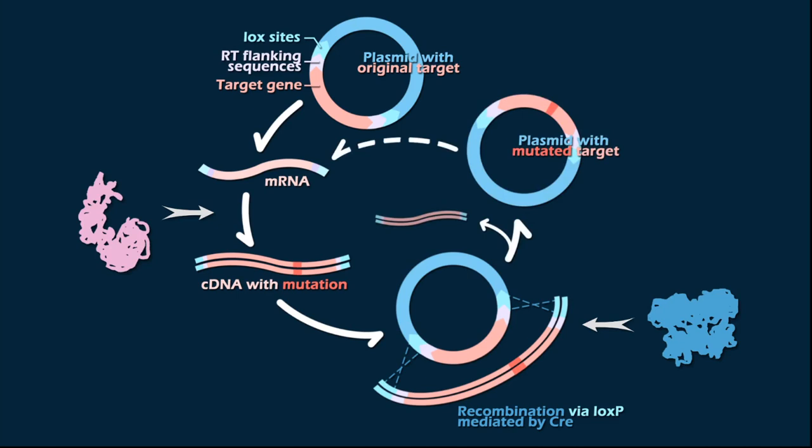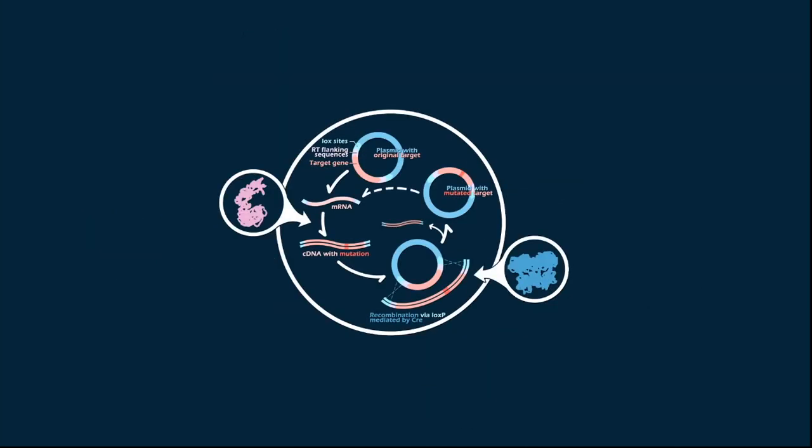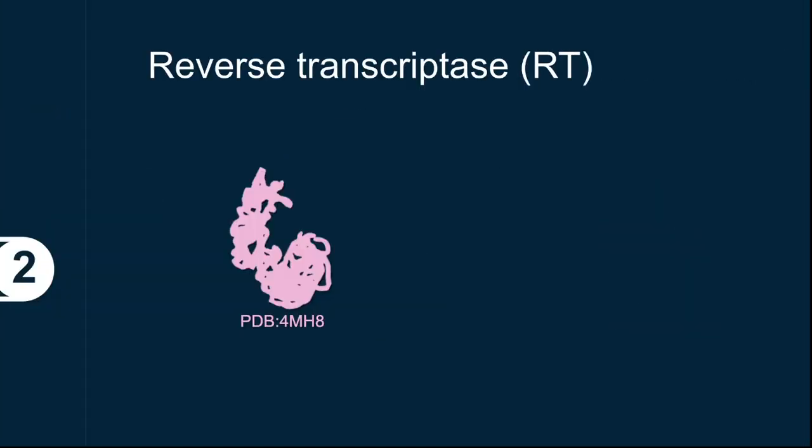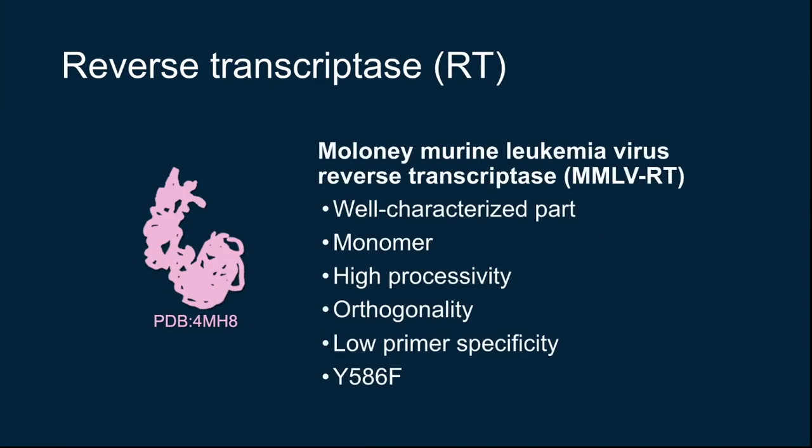Now, the brave E. coli first sharpened its sword. We chose Moloney murine leukemia virus reverse transcriptase for the following five reasons. It is a well-characterized part and functions as a monomer. It has high processivity and can process long-length RNA and is orthogonal to prokaryotic hosts. Also, it has low primer specificity, which enables the self-priming of primers. To further enhance its error probability, a mutation was made.